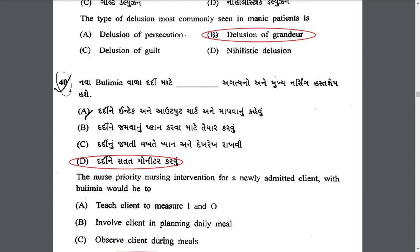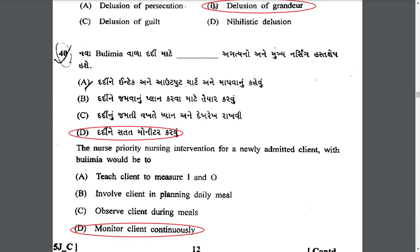The nurse's priority nursing intervention for a newly admitted client with bulimia would be to monitor the client continuously, because bulimia patients exhibit binge eating and purging, so continuously monitoring the patient is very important.